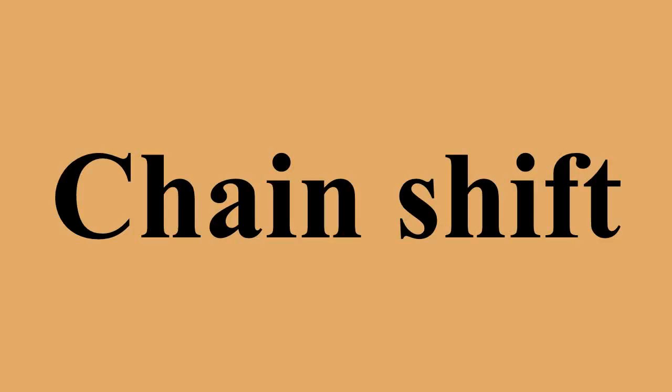A drag chain, or pull chain, is a chain shift in which the phoneme at the leading edge of the chain changes first. In this example, the chain shift would be a pull chain if /e/ changed to /i/ first, opening up a space at the /e/ position, which /a/ then moves to fill.